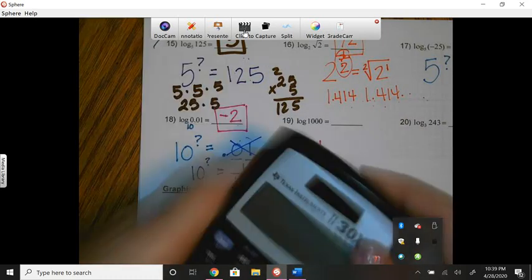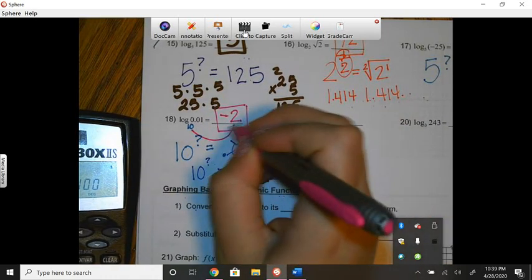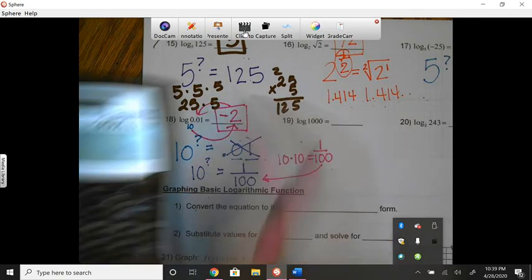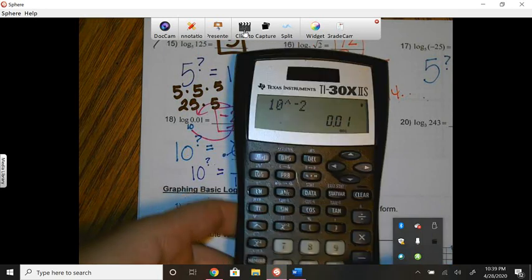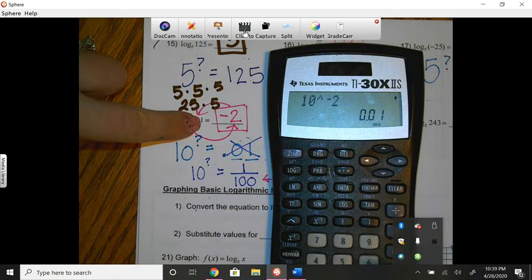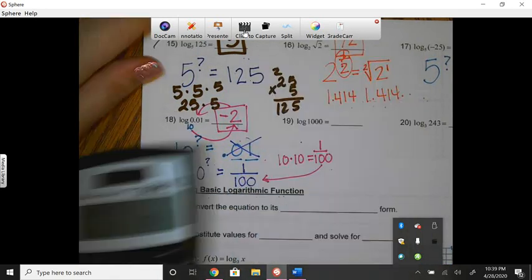So then I'm going to check it. I'm going to make the circle thing. Does 10 to the negative second power equal 0.01? Yes.